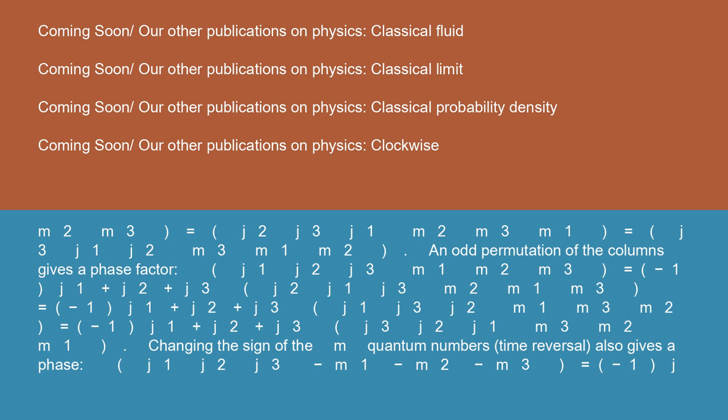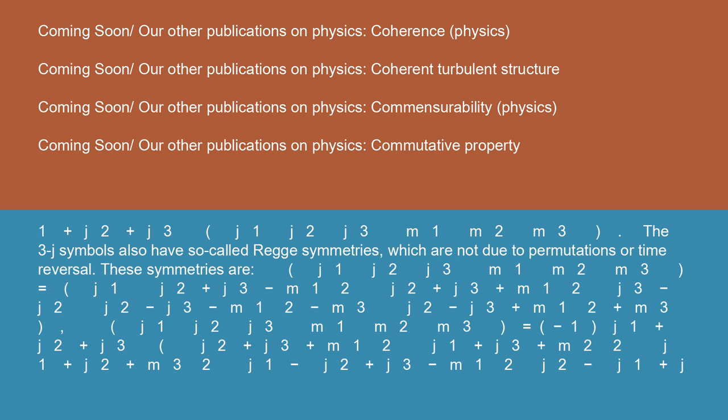(j1 j2 j3; -m1 -m2 -m3) = (-1)^(j1 + j2 + j3) * (j1 j2 j3; m1 m2 m3).